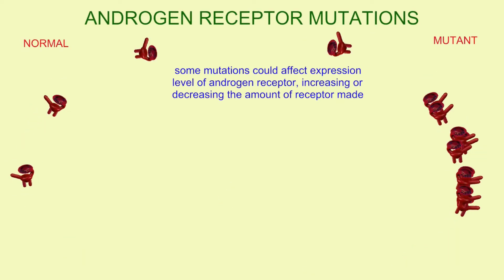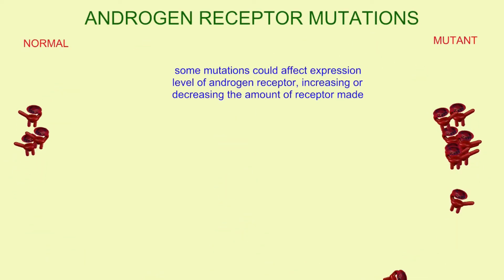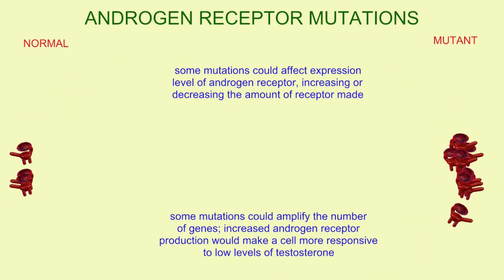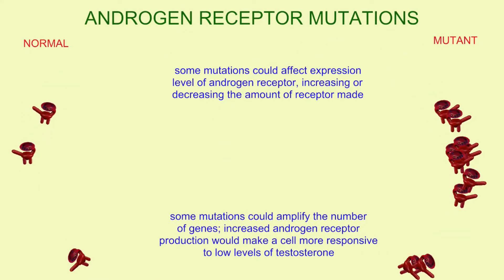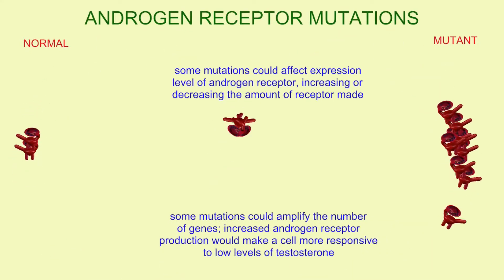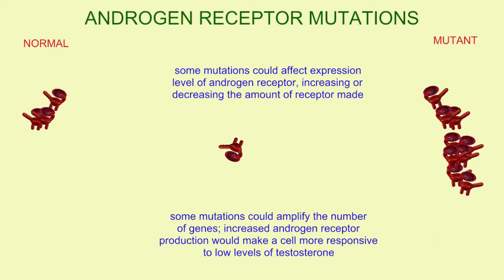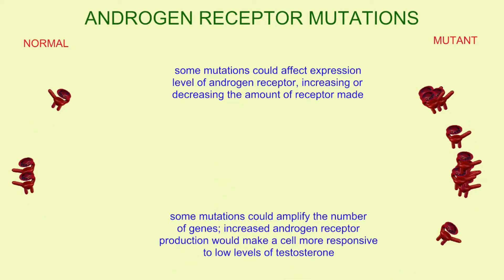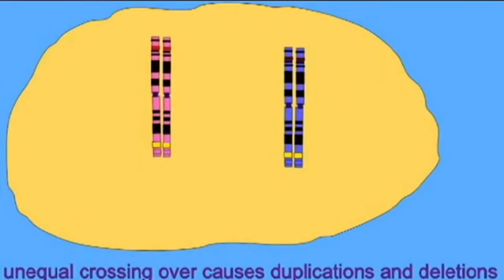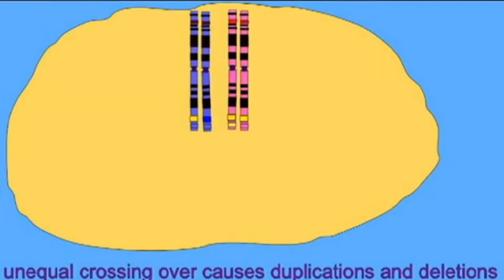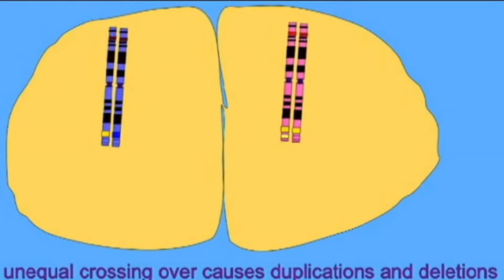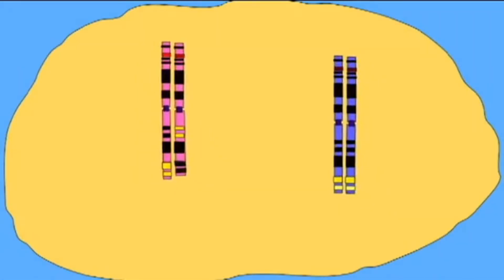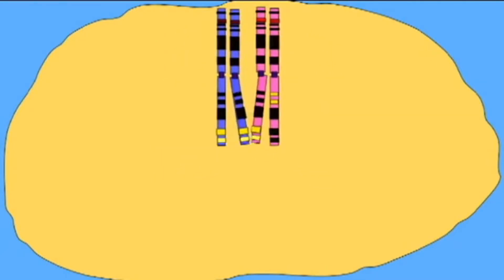Some mutations could constitutively tell the cell that it had bound androgen hormone even when it had not. Other mutations could affect the levels of expression of androgen receptor proteins, making more or less available, which would affect how sensitive a cell was to testosterone. Still other mutations might duplicate the gene, which is located on the X chromosome.